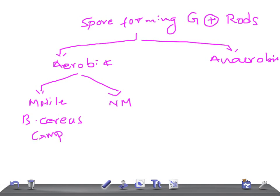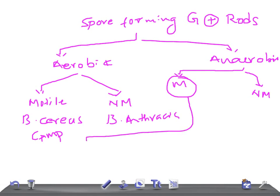In the non-motile aerobic spore-forming bacteria, we have Bacillus anthracis. In the anaerobes, we again classify on motility. The motile group includes Clostridium tetani, Clostridium botulinum, and Clostridium difficile. C. difficile causes antibiotic-associated diarrhea and forms pseudomembranous colitis — a very important feature. It also increases cyclic AMP.